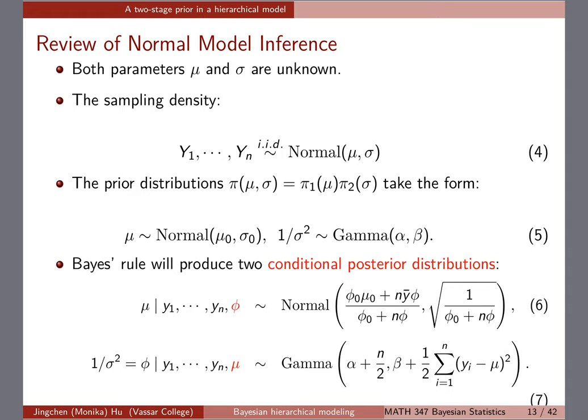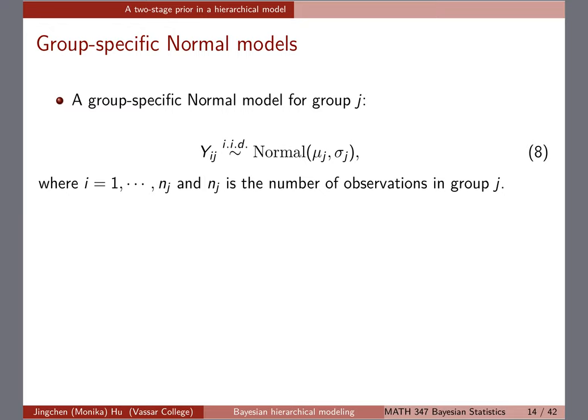So, good to keep those in mind. If we're going to do the group-specific model, it's going to be exactly the same as what we did before — you put everything in a separate group, and your y_ij are IID. The labels are mu_j and sigma_j, which are group-specific. The IID refers to the observations y_i within the same group j, and you have group-specific mean and standard deviation.